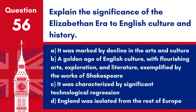Question 56: Explain the significance of the Elizabethan era to English culture and history. a. It was marked by decline in the arts and culture. b. A golden age of English culture, with flourishing arts, exploration, and literature, exemplified by the works of Shakespeare. c. It was characterized by significant technological regression. d. England was isolated from the rest of Europe. Answer: b. The Elizabethan era, under the reign of Queen Elizabeth I, was a period of significant cultural, artistic, and scientific achievements that have had a lasting impact on English identity and heritage.